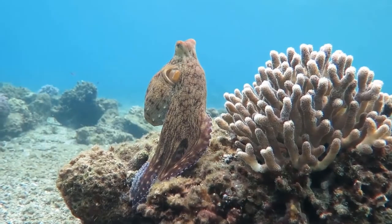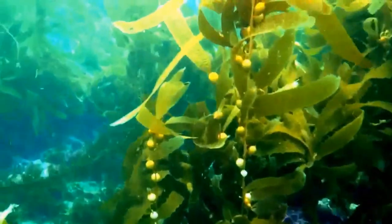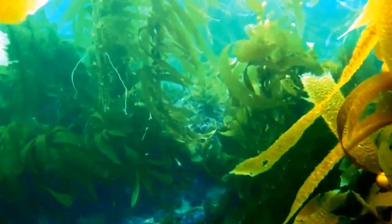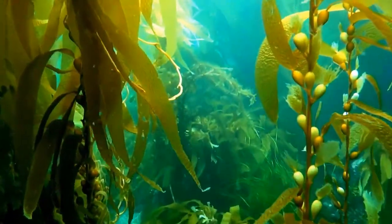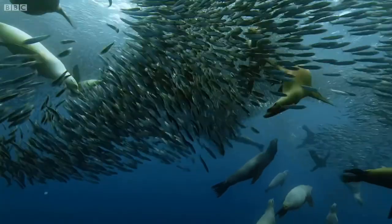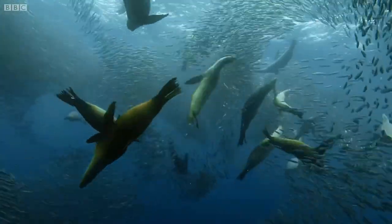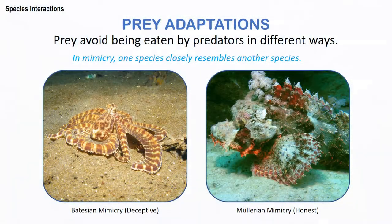Animals may avoid being eaten in different ways. Plants can secrete toxic or poisonous chemicals. Some organisms can flee when a predator approaches. Others escape detection by hiding or by resembling an inedible object. Some animals use deceptive markings such as fake eyes or false heads to scare predators.